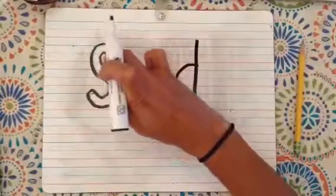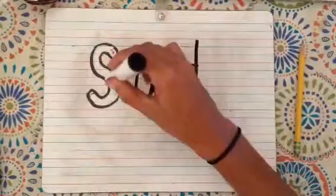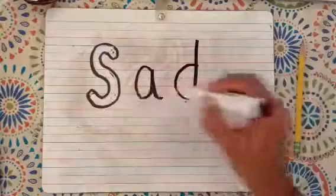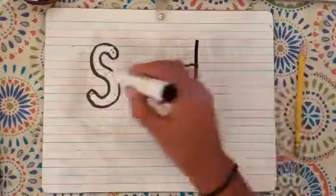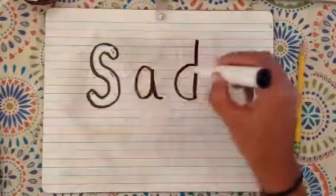Okay, so we have our first bubble letter. Do you see the thickness in the S? In order to keep your composition balanced, we want the same thickness around the A and the D.